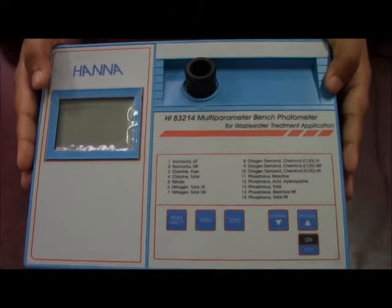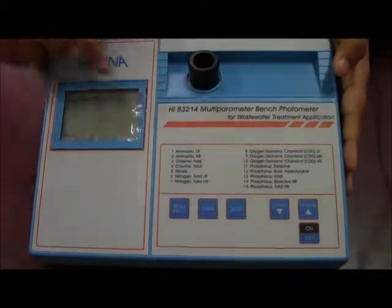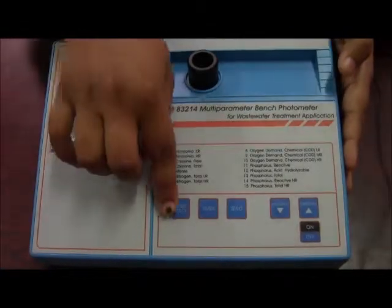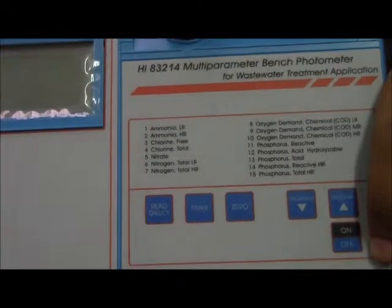This is HANA HI83214 Multi-Parameter Bench Photometer. This is its LCD display. These are its functional keys and these are its two navigation keys. This is its on-off button.